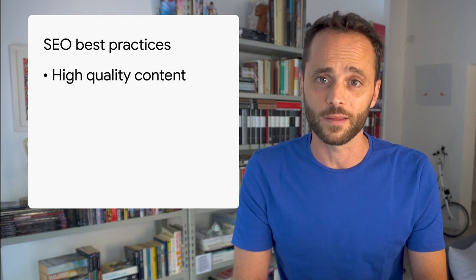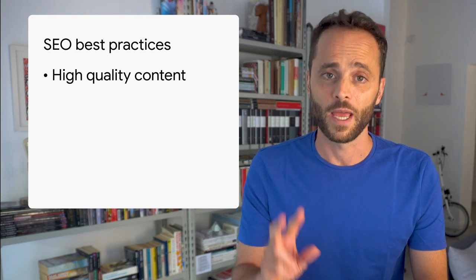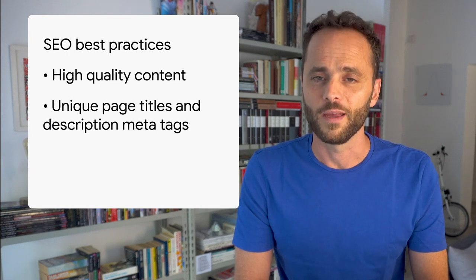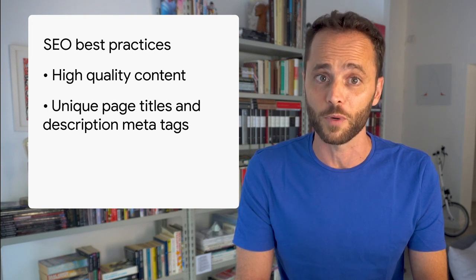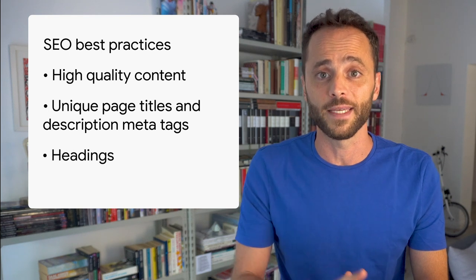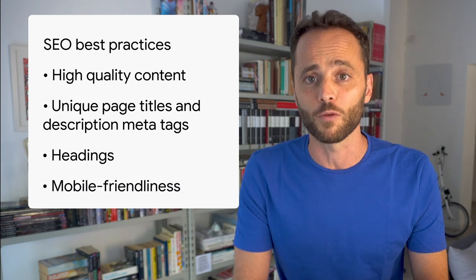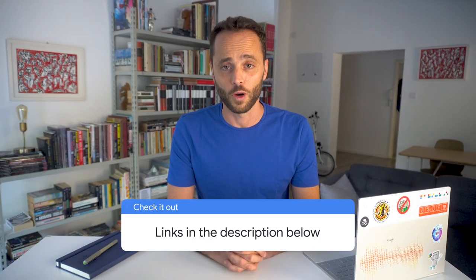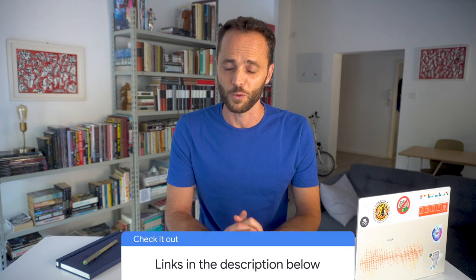Create high-quality content that is factually accurate, clearly written, and comprehensive. Write unique page titles and description meta tags for each of your pages. These are HTML elements that tell users and search engines what the topic of a particular page is. Use headings to emphasize important text in your pages. And make your website mobile-friendly, as most people are searching on Google using a mobile device. To learn more about the suggestions above and others, check the SEO starter guide linked in the description. It's long, but will be worth your while.